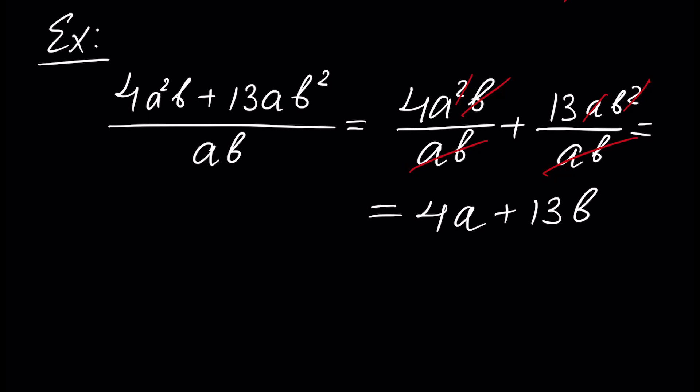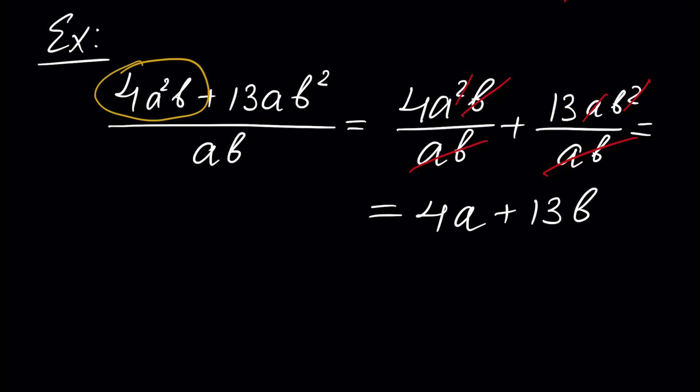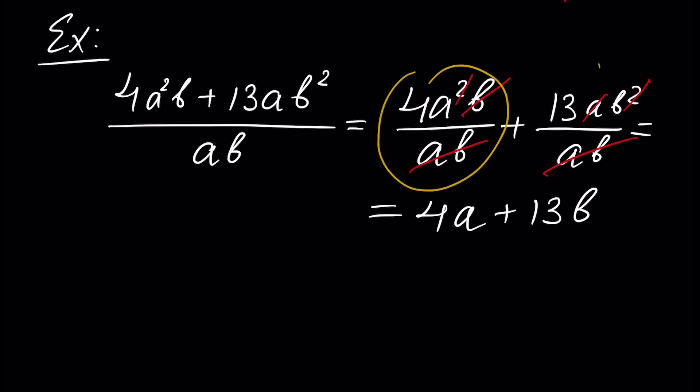I wanted to explain that in this case, when we divide a sum of monomials — this is the sum of two monomials — the result will be a polynomial. If we divide the sum of two monomials by a monomial, the quotient of a sum is equal to the sum of quotients.